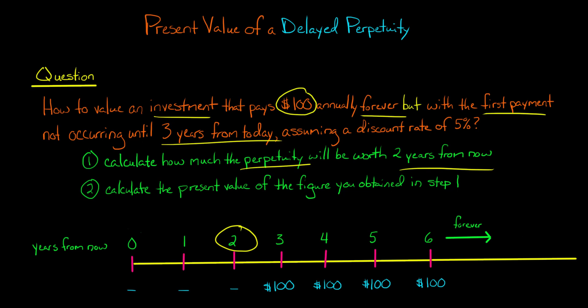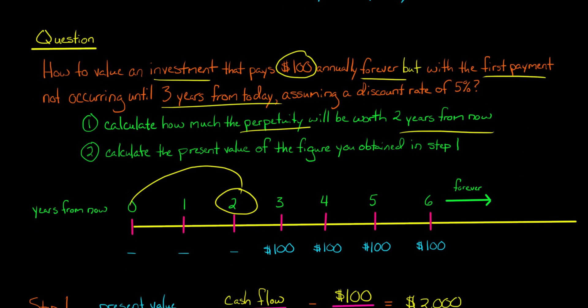And then we're going to say, okay, whatever number that is, let's go and discount that to today's dollars. That's going to be step two. So let's get to it.